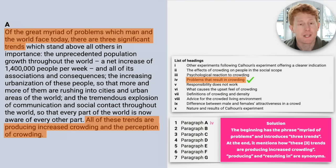Well, the beginning of the text has the phrase myriad of problems. Myriad means many. So many problems, and introduces three trends. So three significant trends. Now at the end, it mentions how these three trends are producing increased crowding. So producing in the text and result in, so result in crowding, are synonym phrases. So they're not the exact same word, but they're synonym phrases. So as a result, the answer is four. This is a good heading for this paragraph.